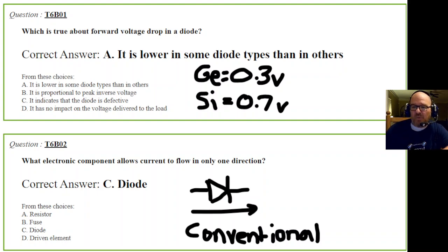Question 2: What electronic component allows current to flow in only one direction? According to conventional current flow, that's from positive to negative. Electron flow is in the opposite direction. Most of what you'll think about is conventional current flow. The answer is diode.